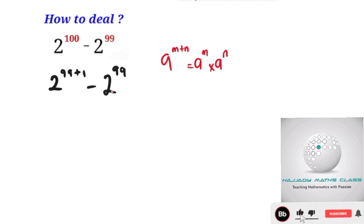So rewriting this using the same approach, this is the same thing as saying 2 to the power of 99 multiplied by 2 to the power of 1, minus 2 to the power of 99.